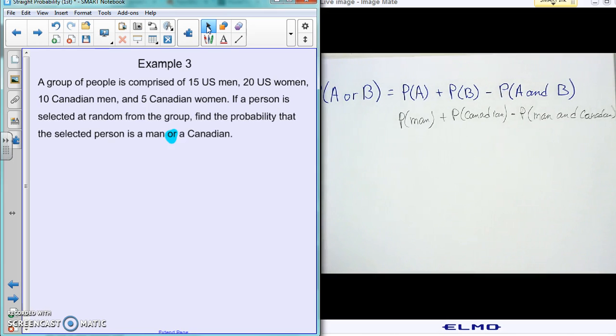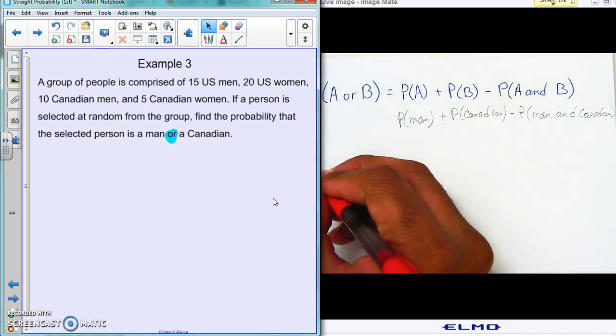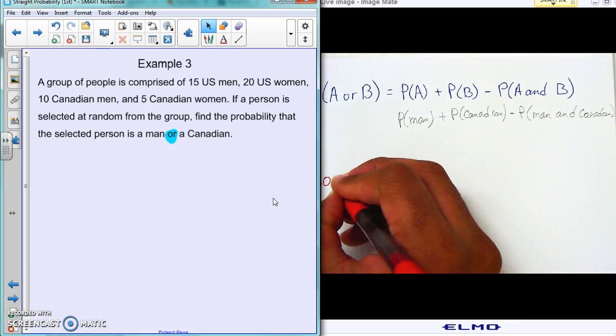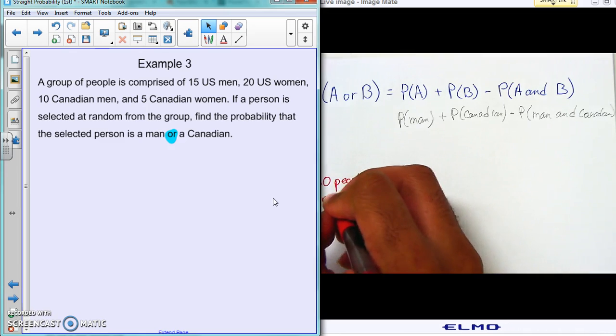First off, what we can do in any of these, we have to figure out how many there are in all, how many people there are in all. So we need to add up the 15 plus the 20 plus the 10 plus the 5, add them all up together, and we can figure out how many numbers there are in all. There's actually 50 people in all if you add all those up.